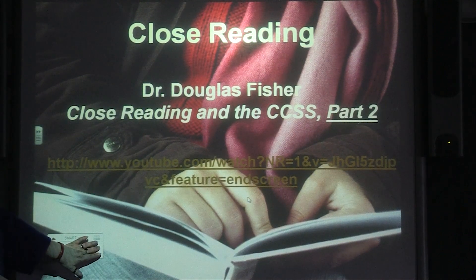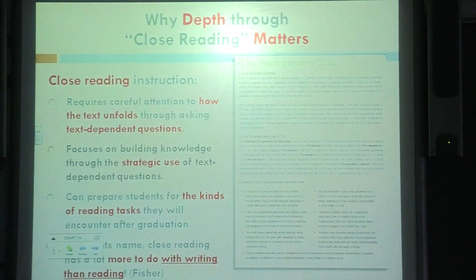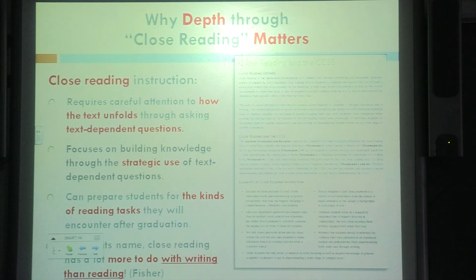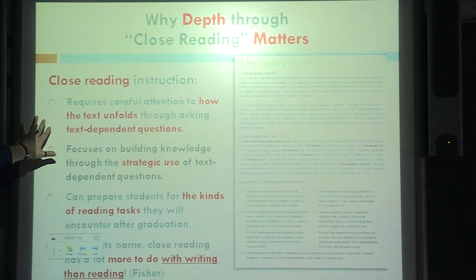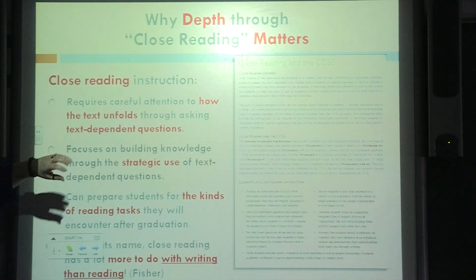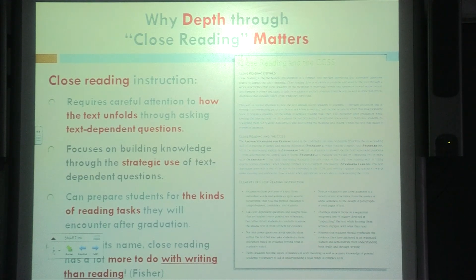With close reading, it's an intentional process in which students are expected to go back and re-read. They're expected to use that text — to go back and extract evidence from that text to support their thinking and to answer questions. You really want students to pay attention to how that text unfolds, and we do that by using text-dependent questions that require students to go back to the text and find information.